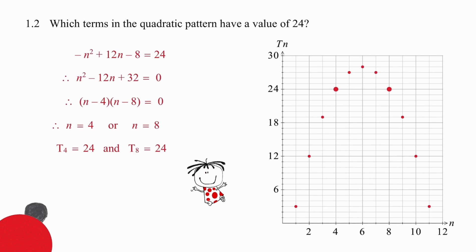In question 1.2 we need to work out which terms have a value of 24. This is a routine question. We're going to equate the general term with the specific value, write that into standard form so that the quadratic equation equals zero. We're going to factorize if possible, otherwise we will use the quadratic formula. When we get our answers we will check that they are both positive integers. In this instance we can use both, so t4 has a value of 24 and t8 has a value of 24.